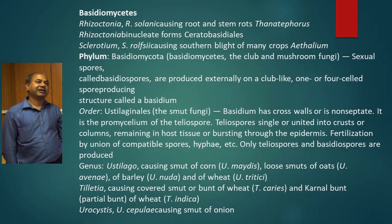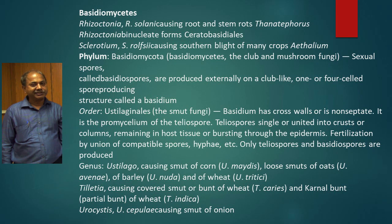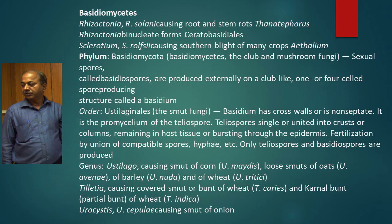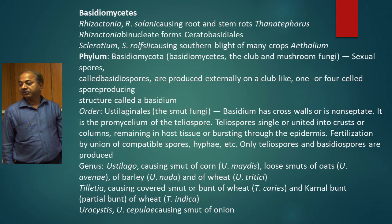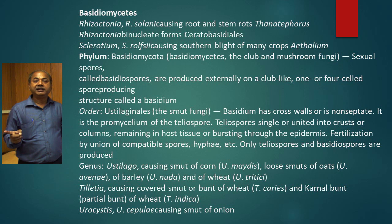The last group is Basidiomycetes. Like in Ascomycetes, asci are formed and ascospores are produced endogenously, while in Basidiomycetes it is the basidium on which basidiospores are produced, which are ectogenously produced. These are the basic differences between Ascomycetes and Basidiomycetes. Under Basidiomycetes, the genus Rhizoctonia — Rhizoctonia solani causes root rot and stem rot — with perfect stage Thanatephorus. Rhizoctonia coming under Deuteromycotina, but when the perfect stage is known, it comes under Basidiomycetes; the perfect stage is Thanatephorus.